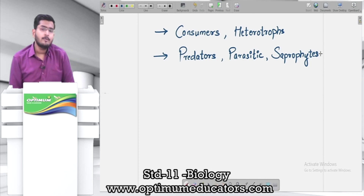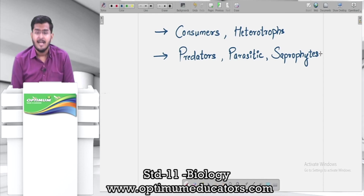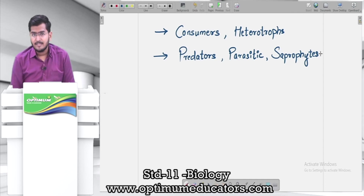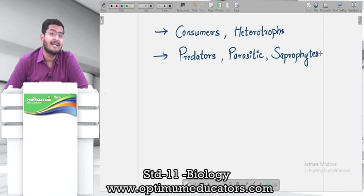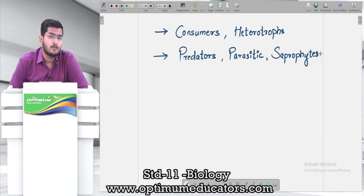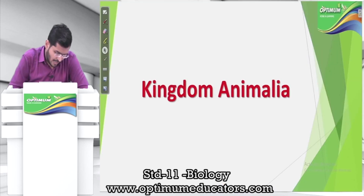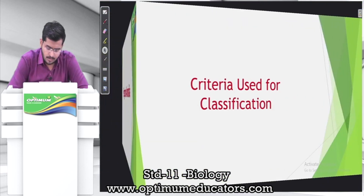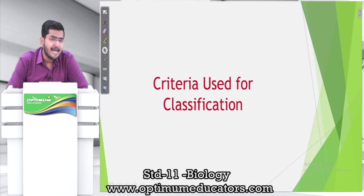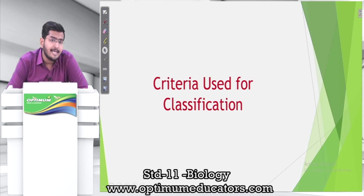Now let's discuss what the basic features are on the basis of which we classify animals. There has to be some specific criteria for classification. There are a total of six criteria that we need to study, on the basis of which we will categorize animals into different phyla and different classes.